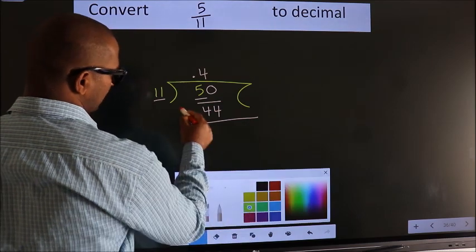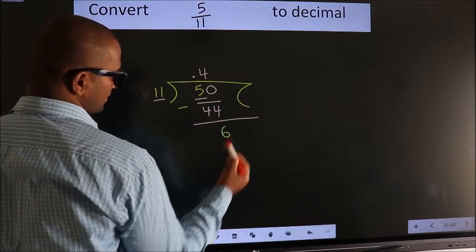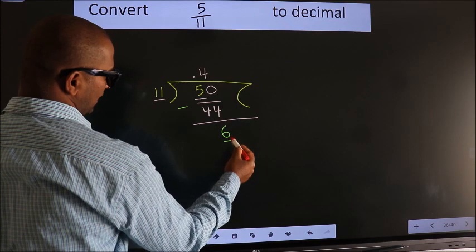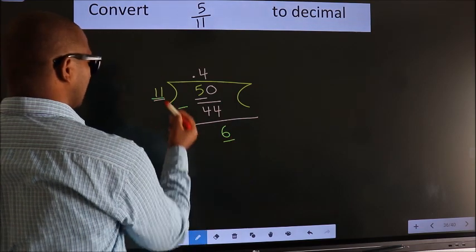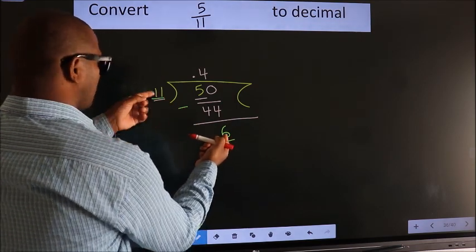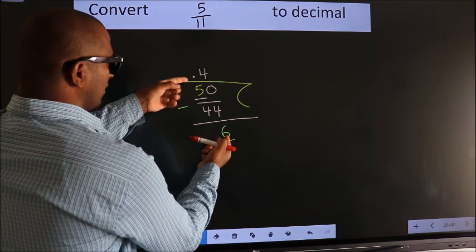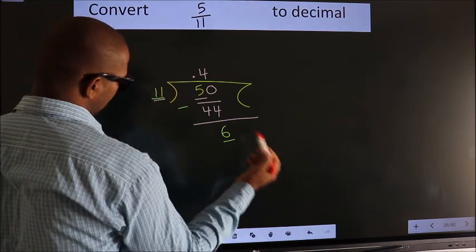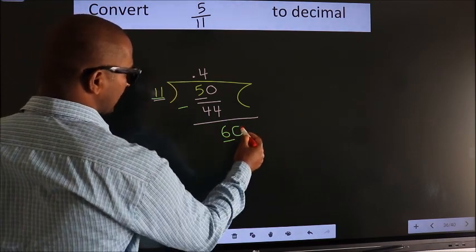Now we subtract. We get 6. Here we have 6, here 11. 6 is smaller than 11. We already have the decimal, so this time we can directly take 0.